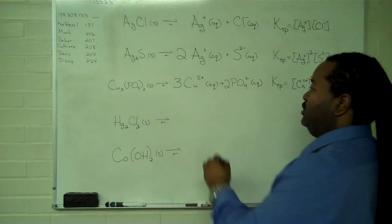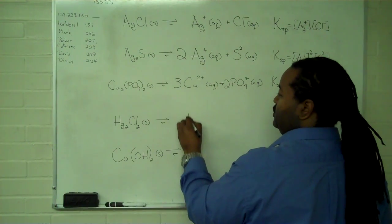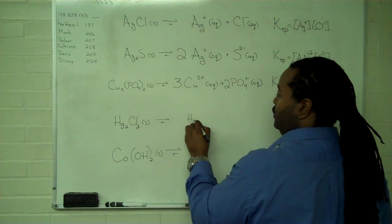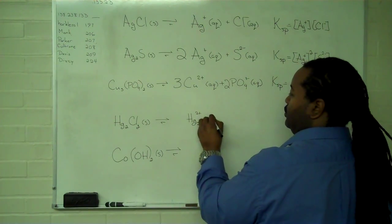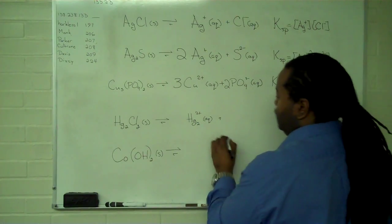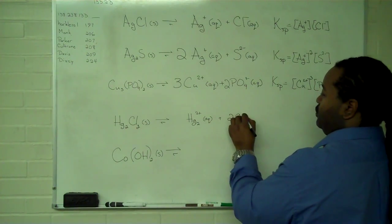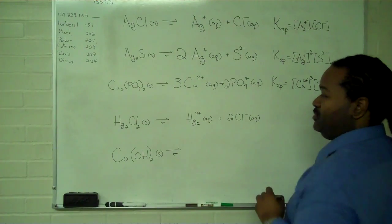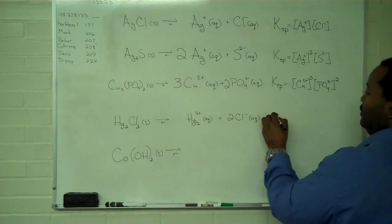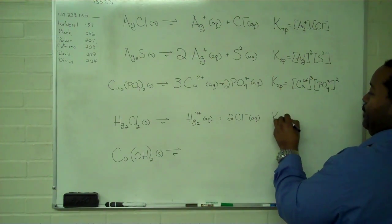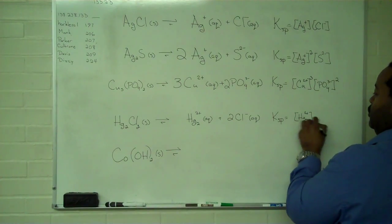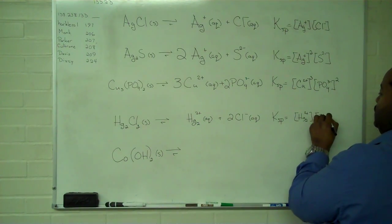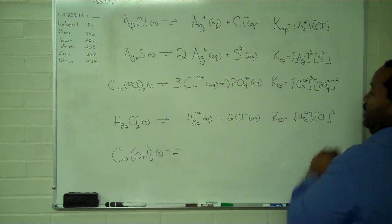Mercury one chloride will dissociate into the mercury one polyatomic ion, and we have two chloride ions because we have to make sure this thing is balanced. So the Ksp then is our mercury concentration times the square of our chloride ion concentration.